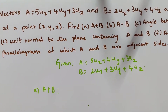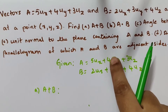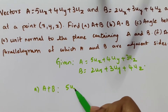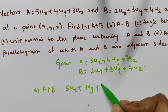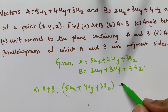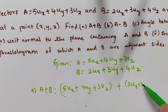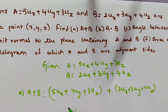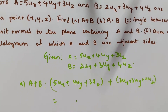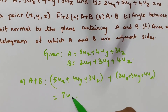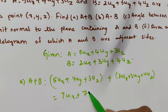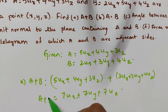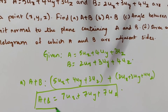The sum of two vectors is found by simply adding component-wise. So A plus B: 5 + 2 = 7ux, 4 + 3 = 7uy, 3 + 4 = 7uz. Therefore A plus B = 7ux + 7uy + 7uz.